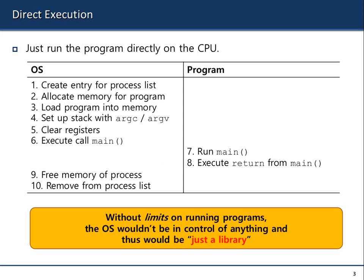After returning from the process, the memory is freed and the state is as it was. The problem is: without limits on running programs, the OS wouldn't be in control of anything and would just be a library. It's very important — the kernel should be running at all times on the CPU, controlling everything.